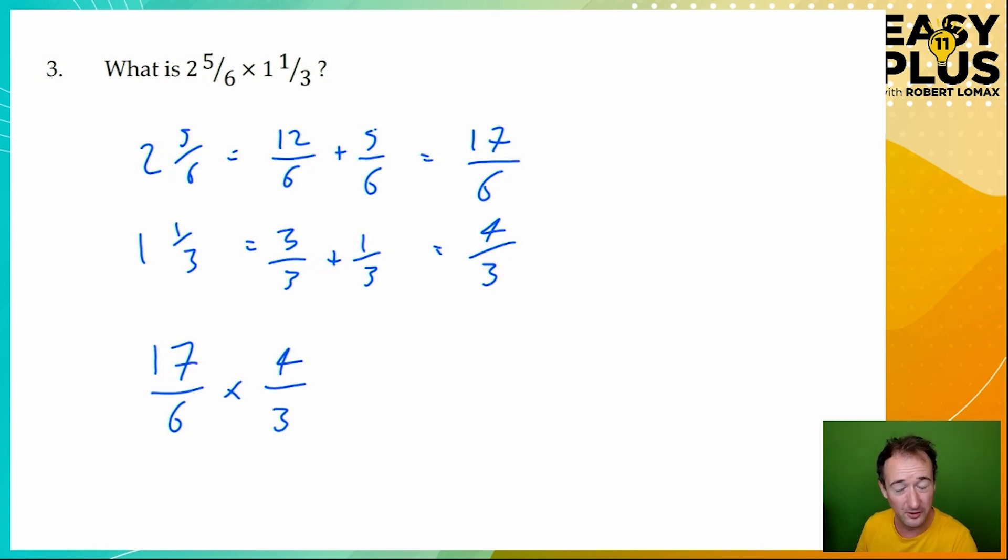Now if you remember from the last question, you can cancel diagonally. Seventeen and three don't cancel. Seventeen is a prime number, which means that it has no factors apart from seventeen and one. But six and four are both divisible by two. And now we've got a rather easier multiplication. Seventeen times two is thirty-four, and three times three is nine. The only factors of nine are one, three, and nine, and thirty-four doesn't divide by three or nine. So this is our answer in its simplest form.